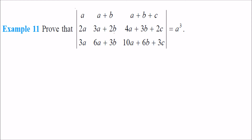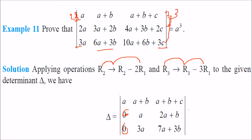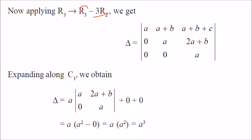Worked example: prove that the determinant with rows (a², a+b, 3a+2b, 6a+3b), (a+b, 4a+3b+2c, 10a+6b+3c) equals a³. Applying R2 → R2 − 2·R1 and R3 → R3 − 3·R1 gives two zeros. Then multiplying R2 by 3 and subtracting from R3 gives further simplification. After expanding, we get a × a² = a³.